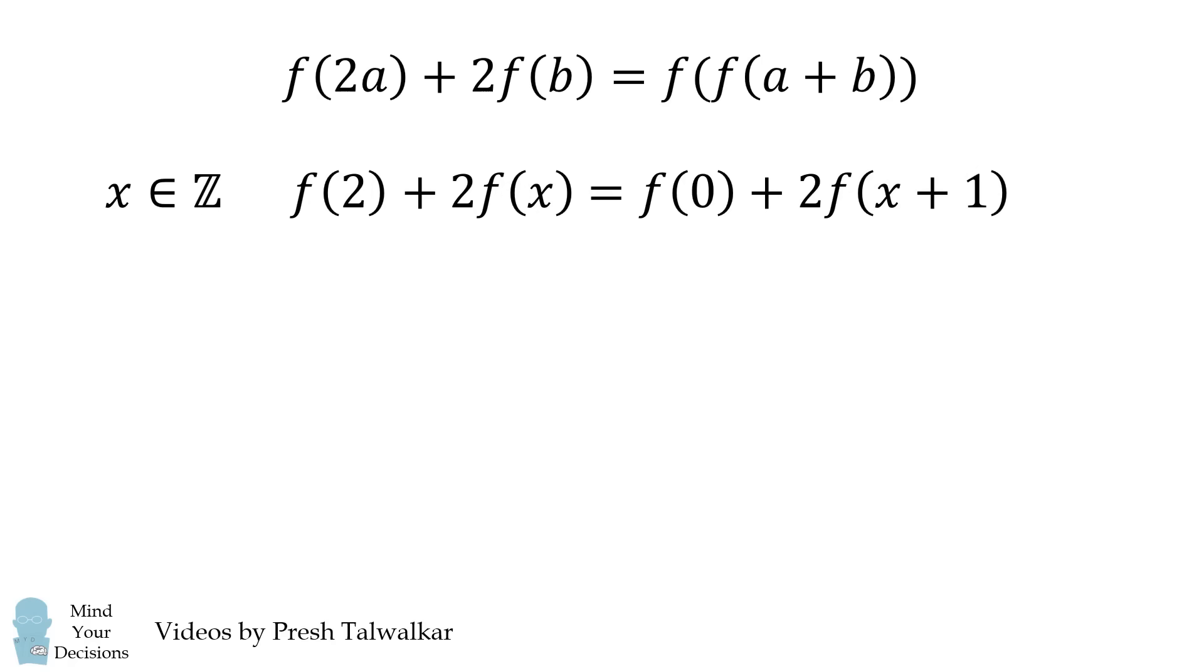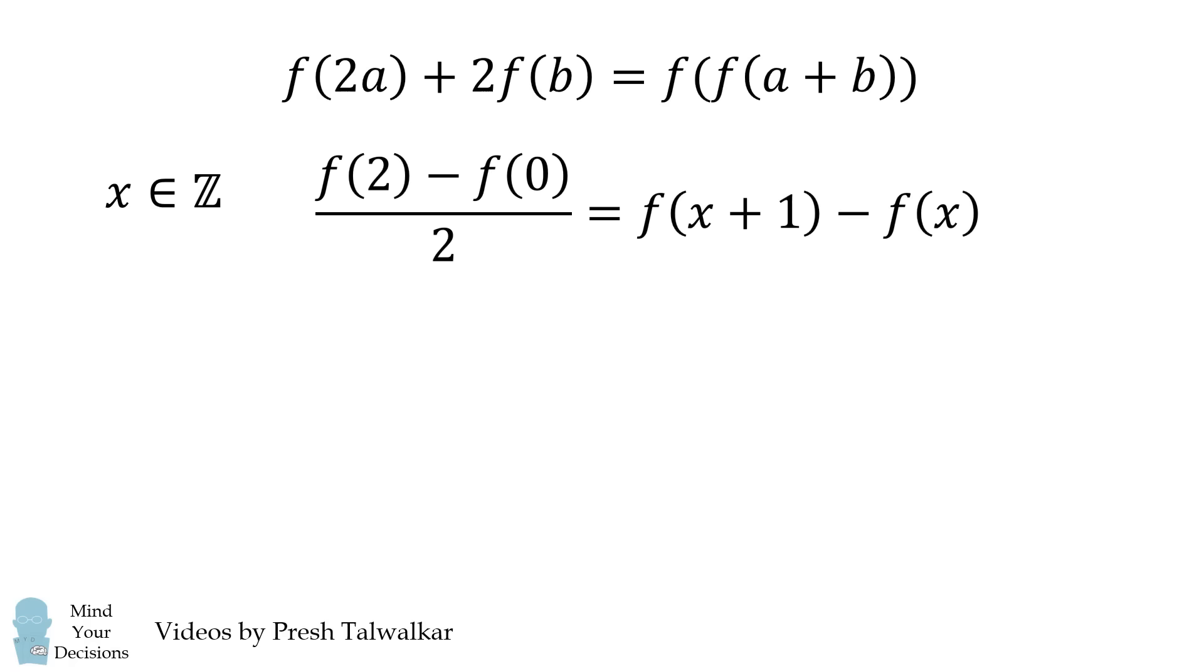Now we're going to manipulate this equation. We have an X term on the left and a constant term on the right. So we'll switch them to the other side. We'll bring the constant term to the left side and the X term to the right side. Now we'll divide both sides of this equation by two.